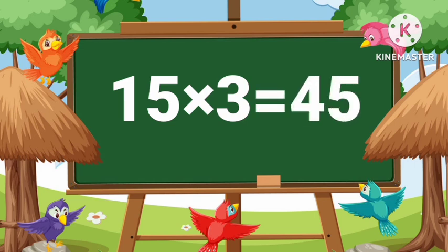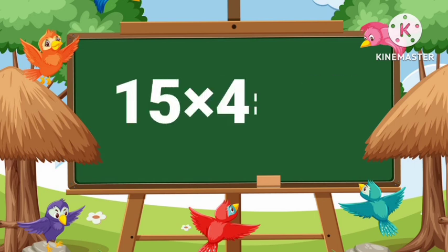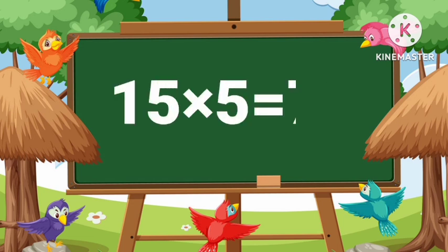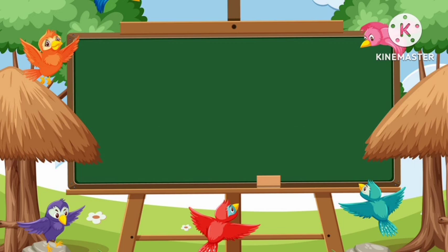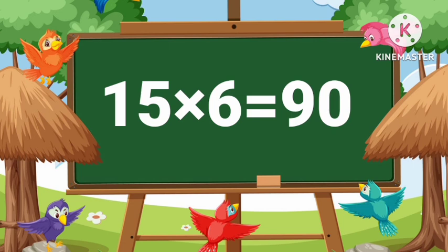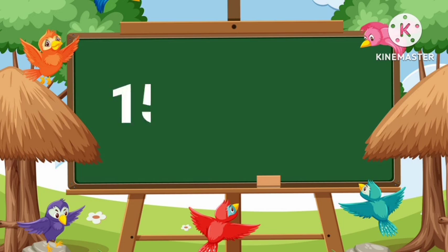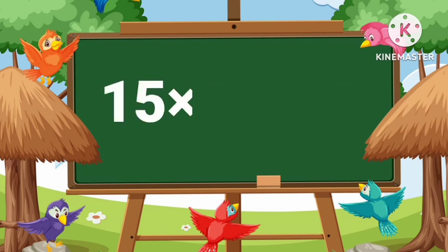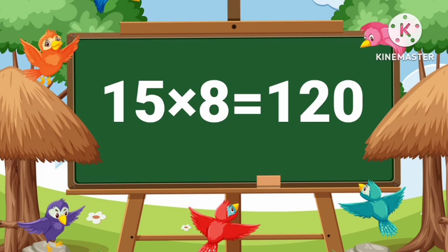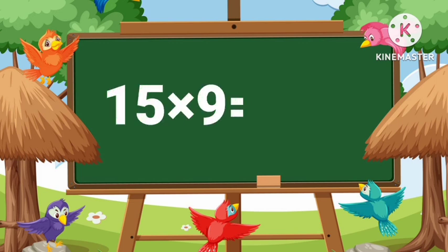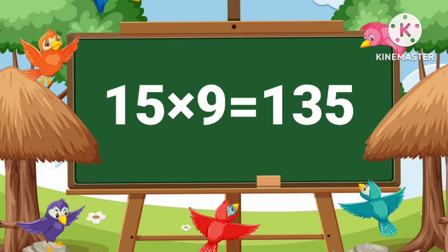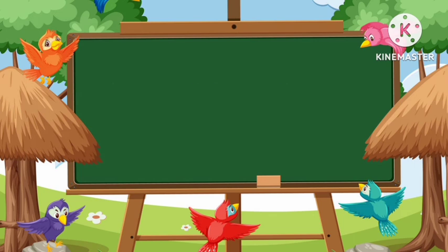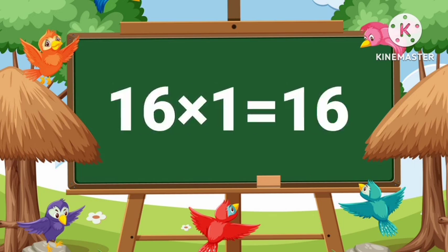Fifteen ones are fifteen. Fifteen twos are thirty. Fifteen threes are forty-five. Fifteen fours are sixty. Fifteen fives are seventy-five. Fifteen sixes are ninety. Fifteen sevens are one hundred five. Fifteen eights are one hundred twenty. Fifteen nines are one hundred thirty-five. Fifteen tens are one hundred fifty. Sixteen ones are sixteen.